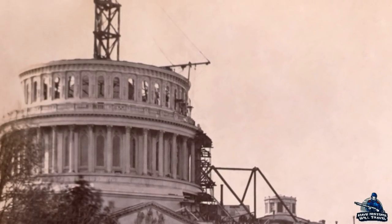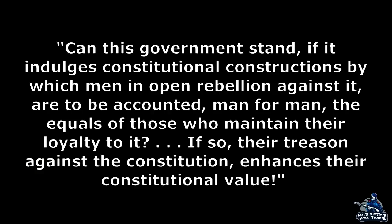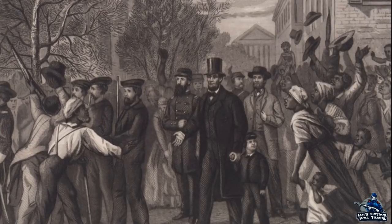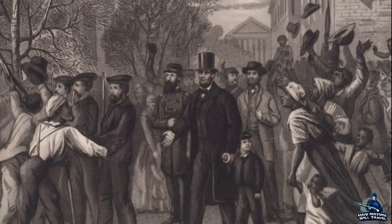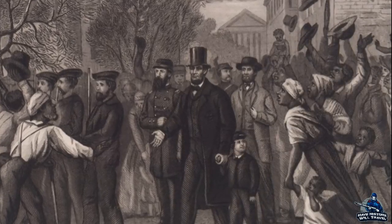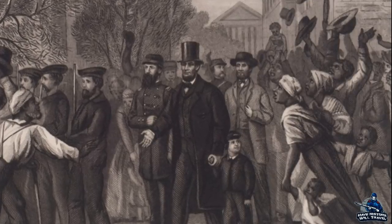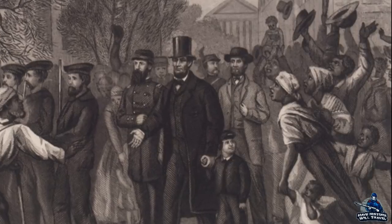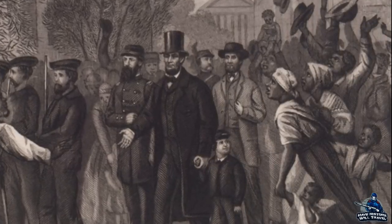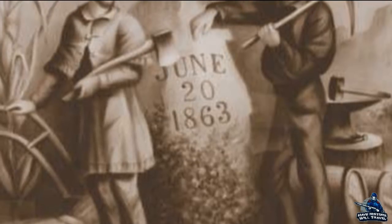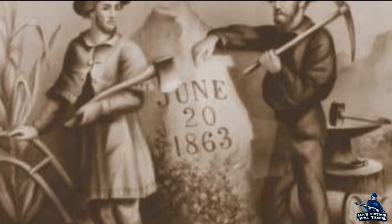Now it was to be signed by the president, who sought counsel with his cabinet. Lincoln asked: 'Can this government stand if it indulges constitutional constructions by which men in open rebellion against it are to be accounted, man for man, the equals of those who maintain their loyalty to it? If so, their treason against the constitution enhances their constitutional value.' Far from viewing West Virginia statehood as an act of secession, Lincoln considered not recognizing the legitimacy of the restored government as perpetuating secession. The federal government had to recognize the loyal people's government as the only legitimate one for Virginia, and if it consented to the formation of a new state and Congress approved, all constitutional procedure was satisfied. On June 20th, 1863, West Virginia finally became a state all its own after decades of division between East and West and years of attempting statehood.